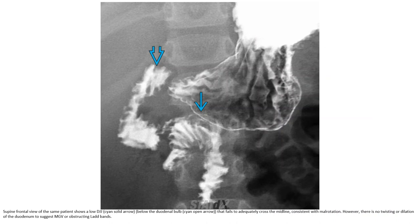Consistent with malrotation. However, there is no twisting or dilated bowel loops to suggest midgut volvulus or obstruction.